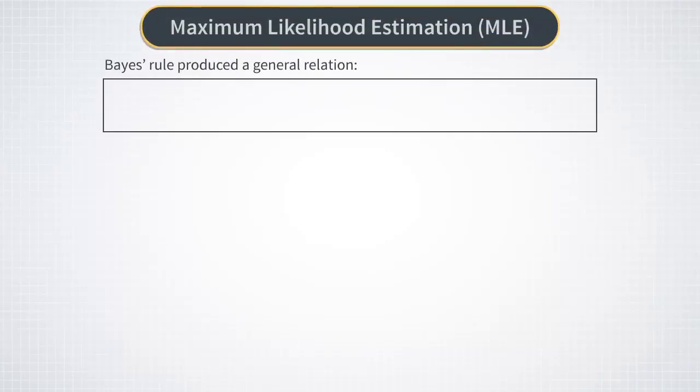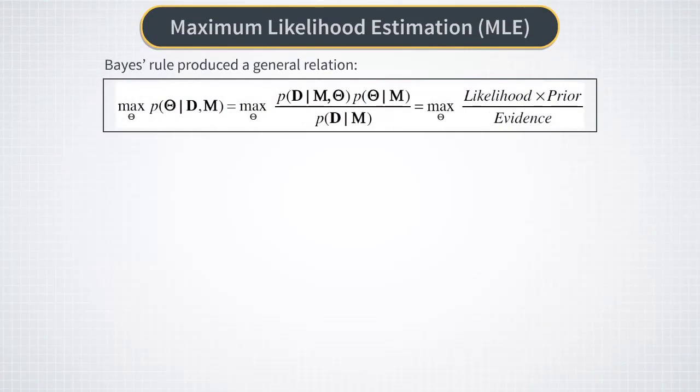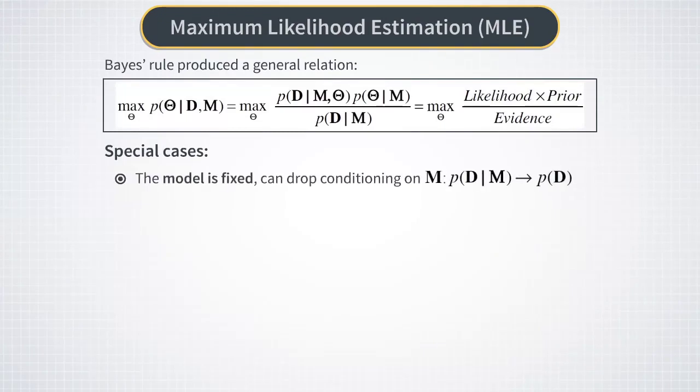Now while the Bayes formula for the posterior probability of parameters given the data is very general, there are some interesting special cases that can be analyzed separately. Let's look at them in sequence.